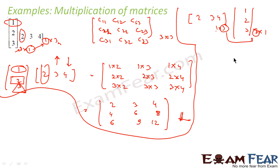So to get one element, you have to take the first row and first column, multiply and add. So in this case it will be 2 into 1 plus 3 into 2 plus 4 into 3. That is 2 plus 6 plus 12, and that is 20.